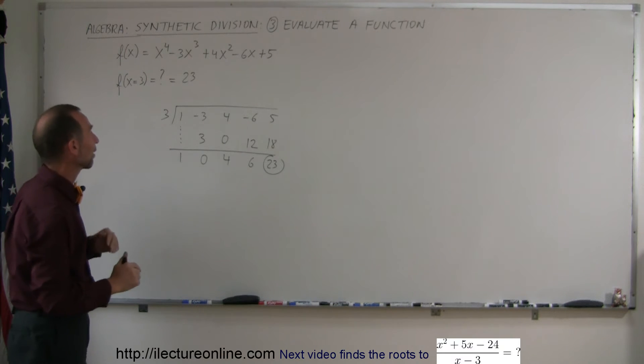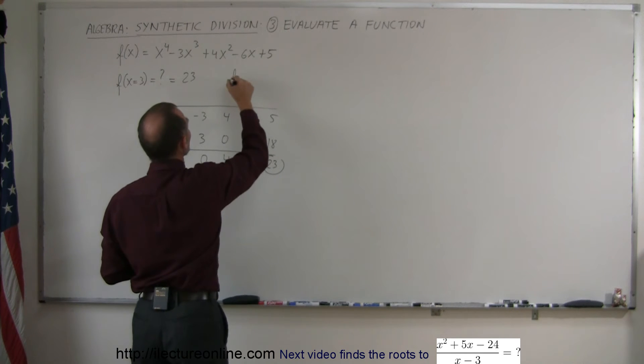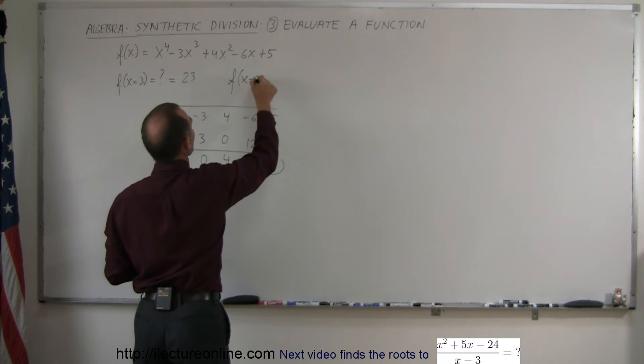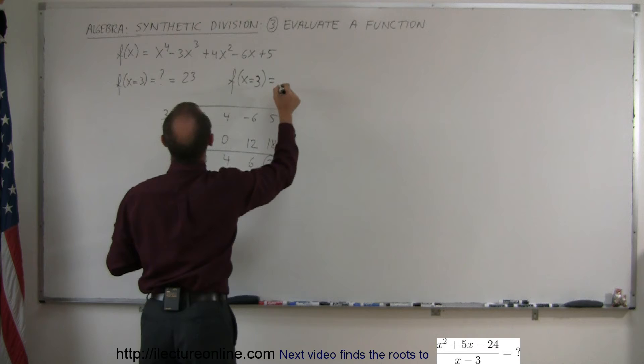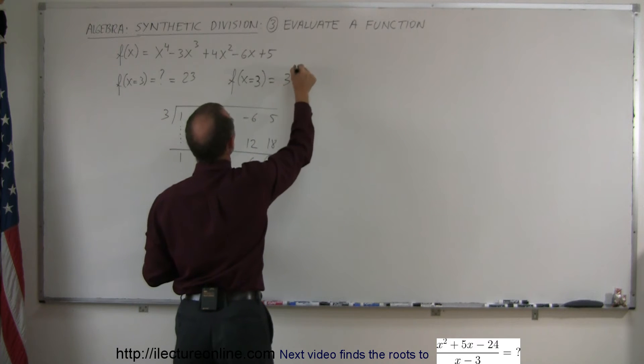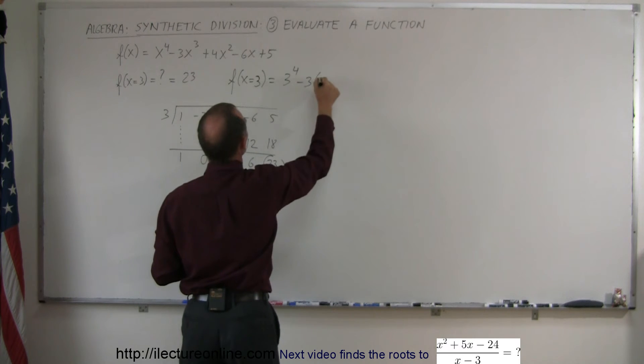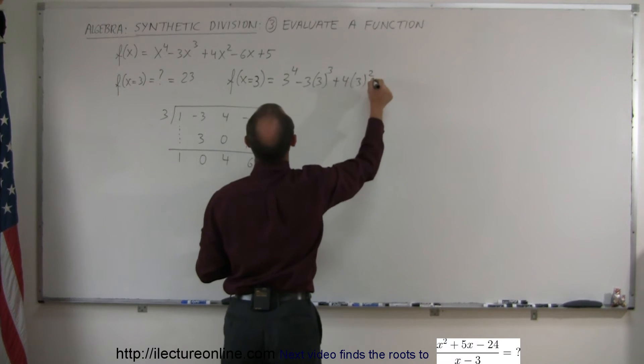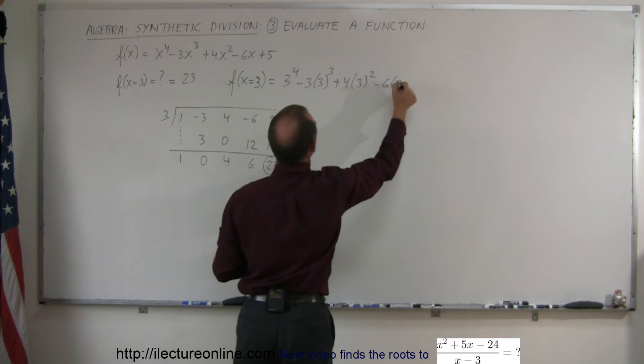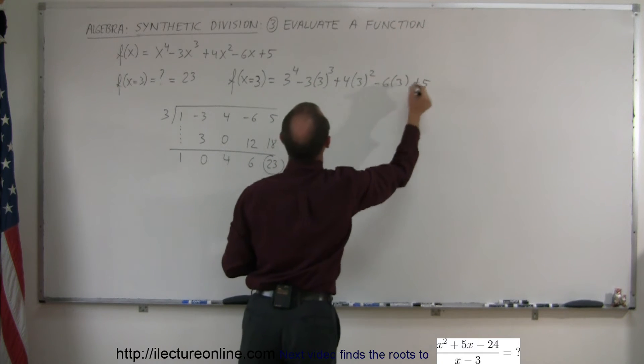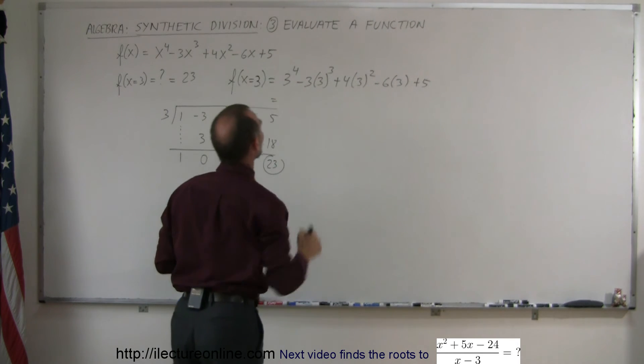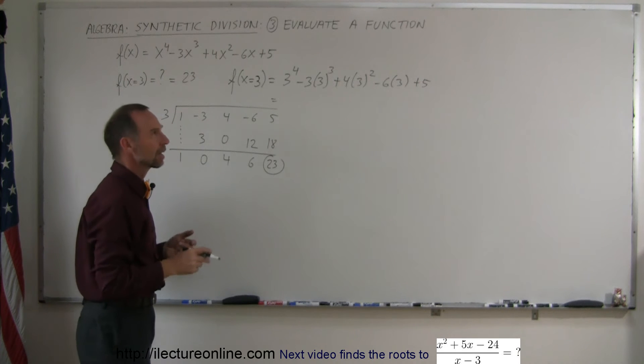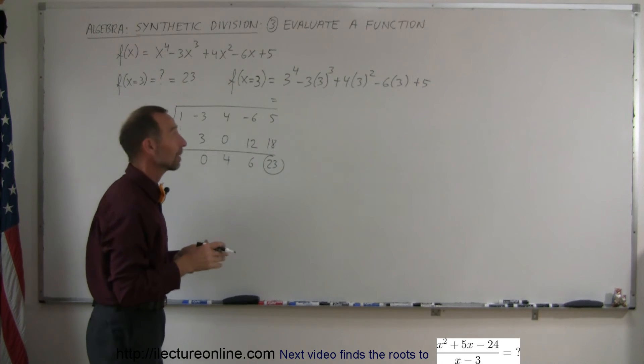So f of 3 equals 3 to the fourth power minus 3 times 3 to the third power plus 4 times 3 squared minus 6 times 3 plus 5. What is 3 to the fourth power? That's 9 times 3 is 27, times 3 is 81.